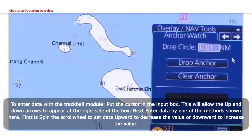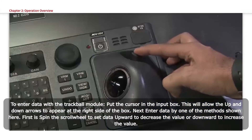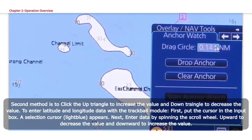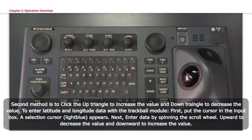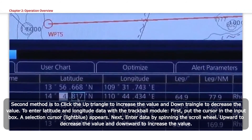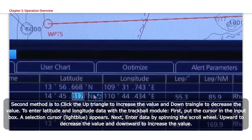Alphanumeric data entry with the trackball module. To enter data with the trackball module, put the cursor in the input box. This will allow the up and down arrows to appear at the right side of the box. Enter data by one of the methods shown: spin the scroll wheel upward to decrease the value or downward to increase the value, or click the up triangle to increase the value and down triangle to decrease the value. To enter latitude and longitude data with the trackball module, put the cursor in the input box. A selection cursor in light blue appears. Then enter data by spinning the scroll wheel upward to decrease the value and downward to increase the value.